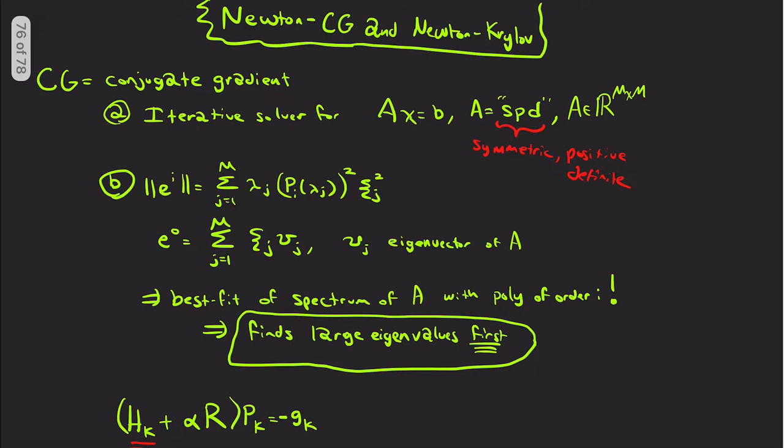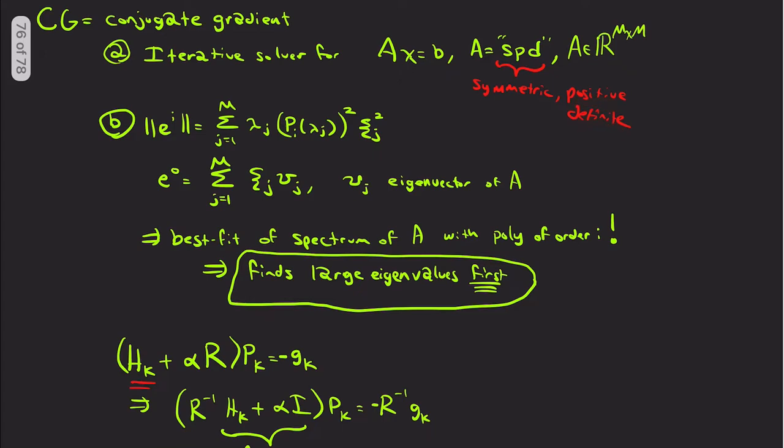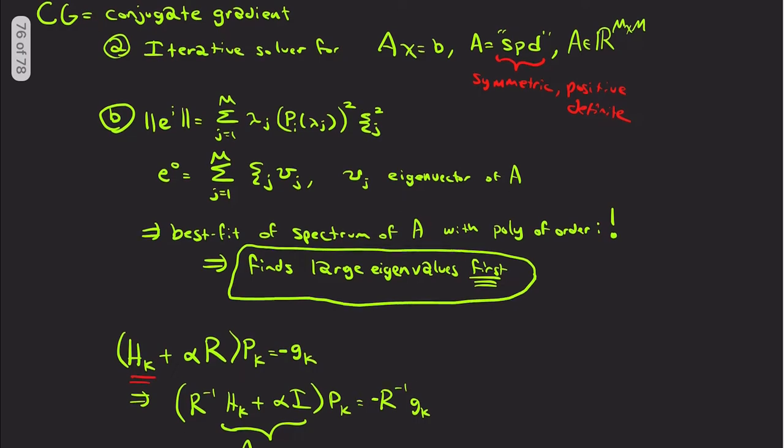I think it's a clever approach to the problem. And without further ado, CG stands for conjugate gradient. If you haven't seen this before, it's an iterative solver for system of form AX equals B, where it's guaranteed to work when A is a symmetric positive definite matrix. Which we can't necessarily, so the Hessian will be symmetric, but it's not necessarily positive definite.